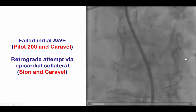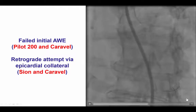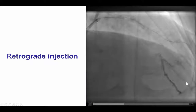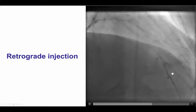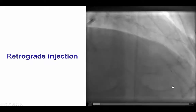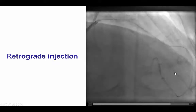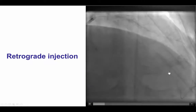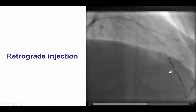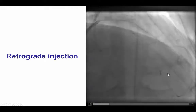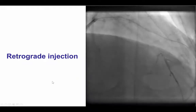We inserted a 150 cm Caravel microcatheter into the second diagonal branch, and then using a Confianza guidewire, we were able to advance through the epicardial collateral all the way to the distal true lumen, and then advance the Caravel and do an injection to determine the presence of disease and the location of the distal cap. Giving contrast to the retrograde microcatheter allows us to better understand the location of the distal cap, how diseased the vessel is, and plan subsequent crossing attempts.